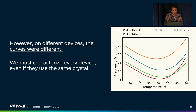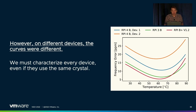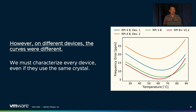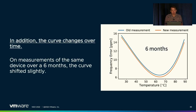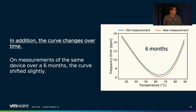However, on different devices — even those of the same model, such as two Raspberry Pi 4B units with the same crystal — they all had different curves. In hindsight this is obvious, because each crystal is cut to its own tolerance. So we actually had to characterize each device individually, even if they share the same crystal model. We also discovered that the curve changed slightly over time: running tests six months apart, the curve shifted ever so slightly, likely due to aging — so this curve also needs to be updated periodically.